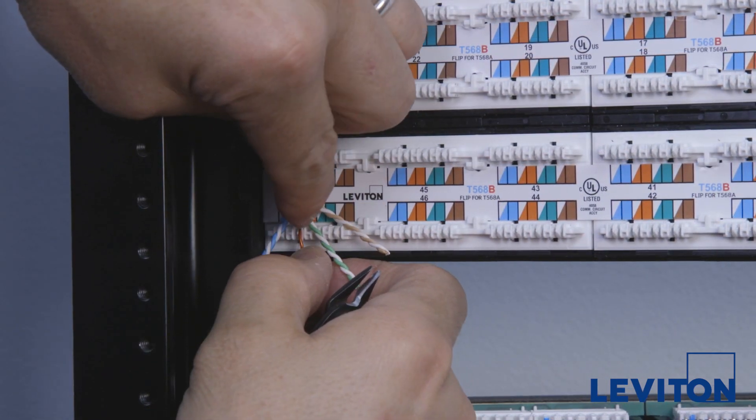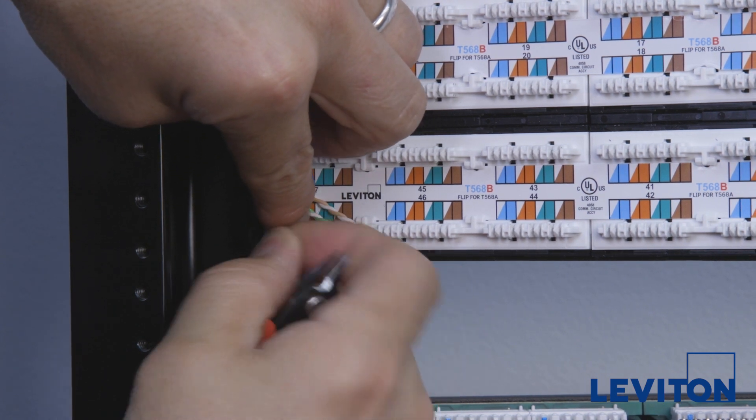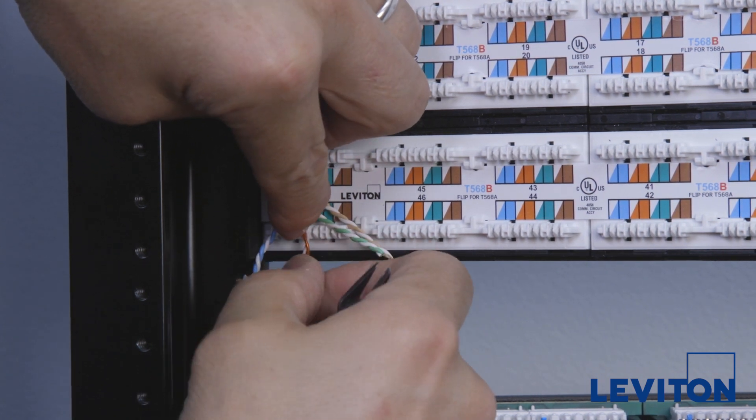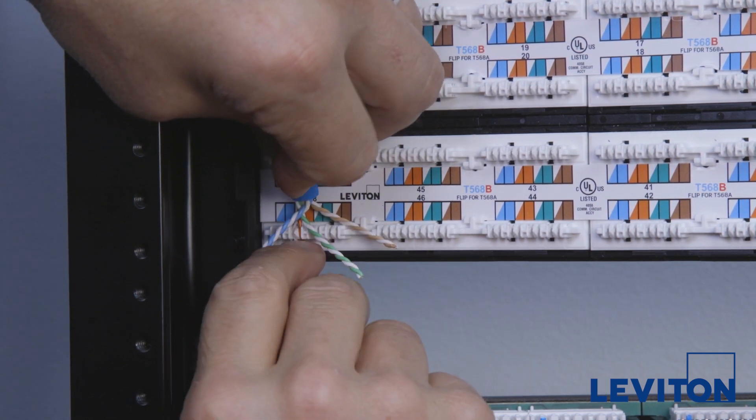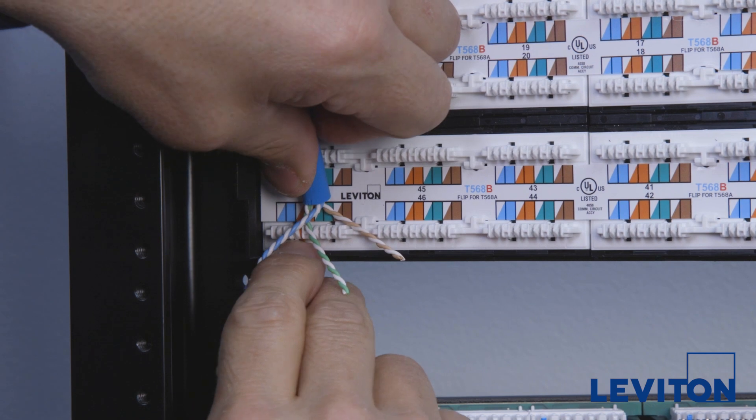Leviton's patch panels include pair separation towers, which can be used to help split pairs. Use the colors marked on the IDC, which align with the colors of the pairs, as a guide when splitting the pairs.